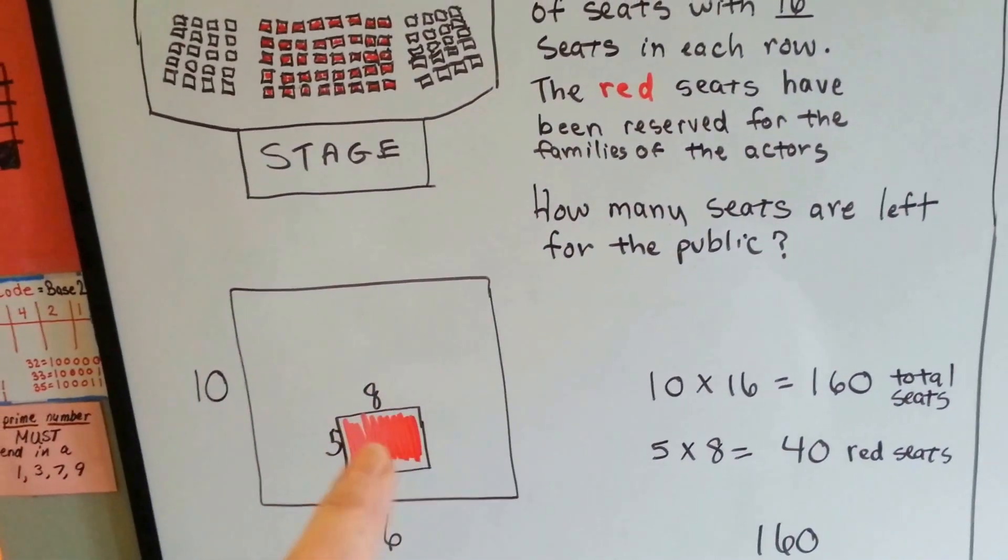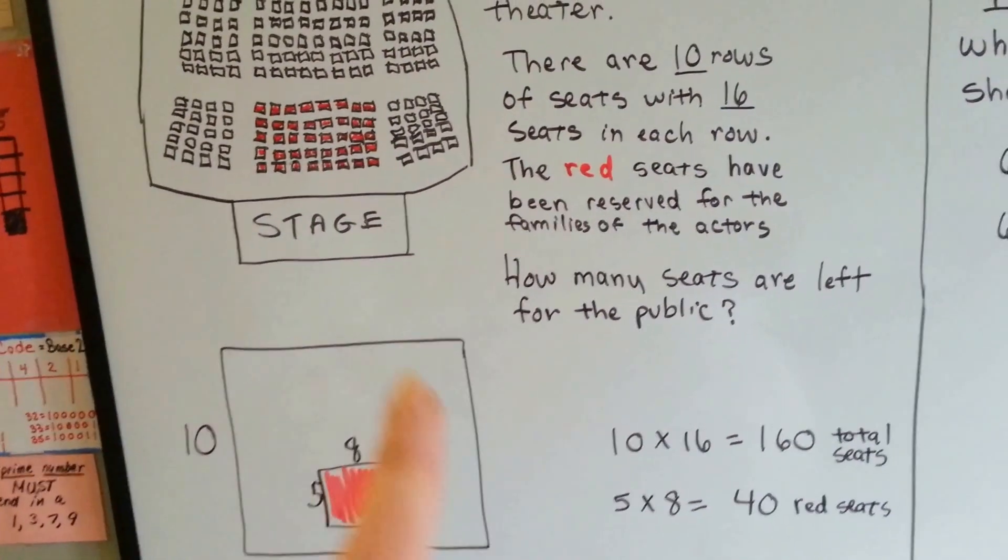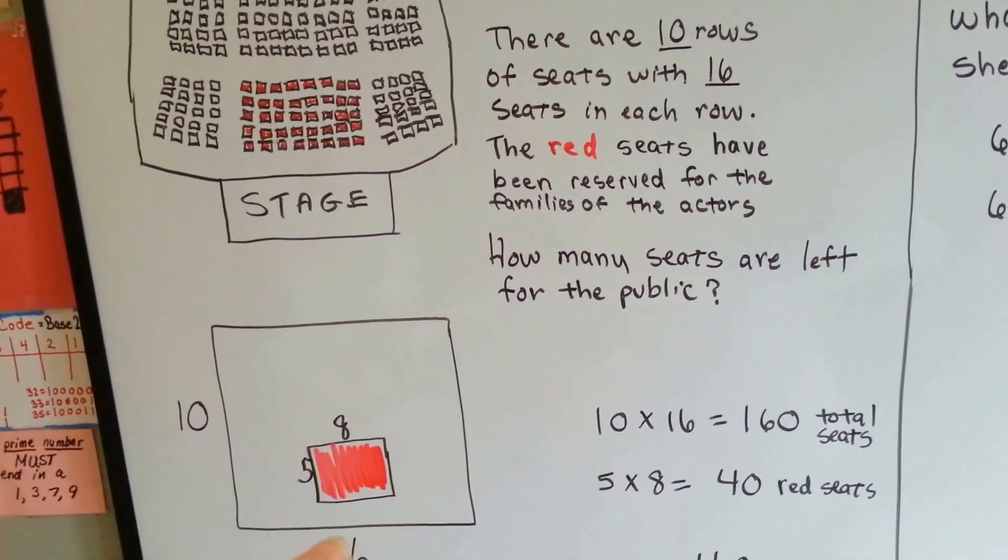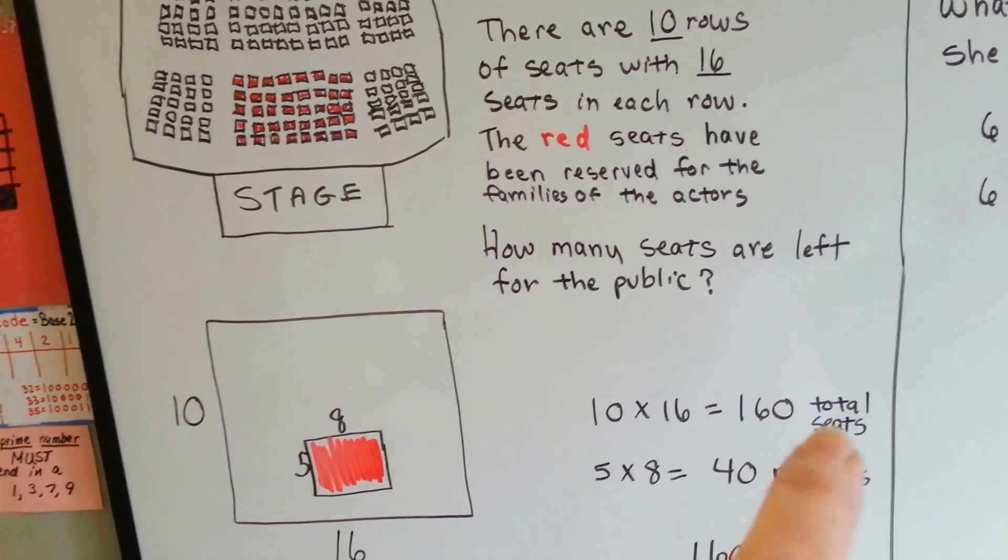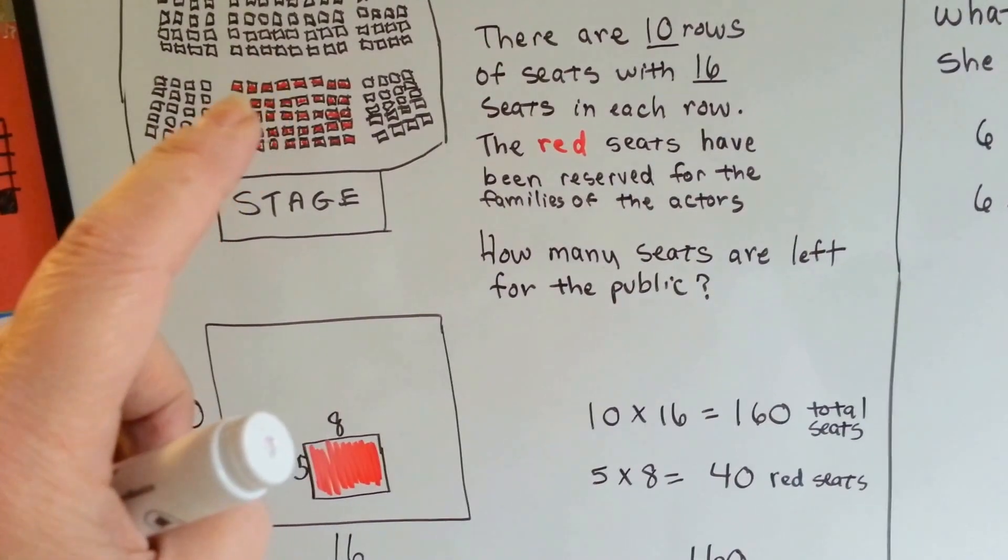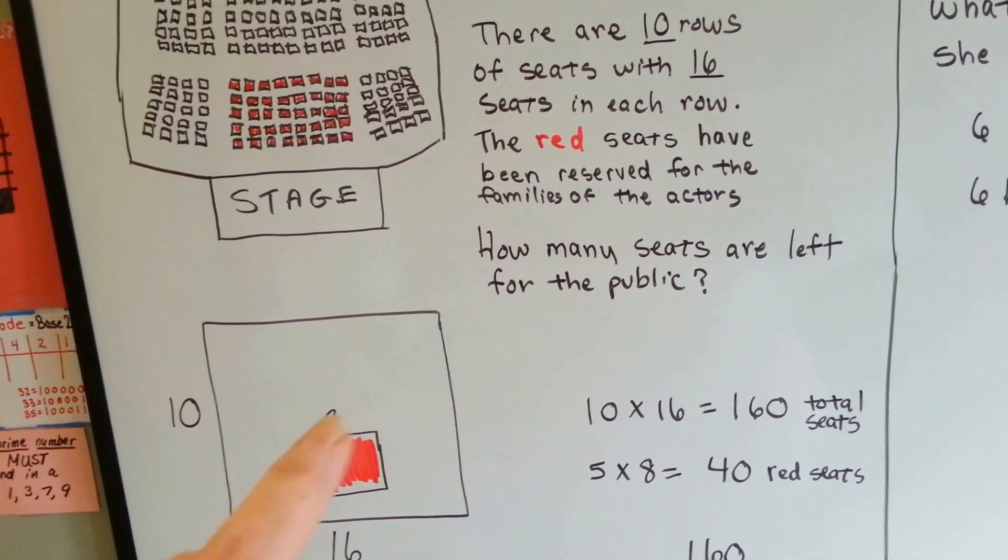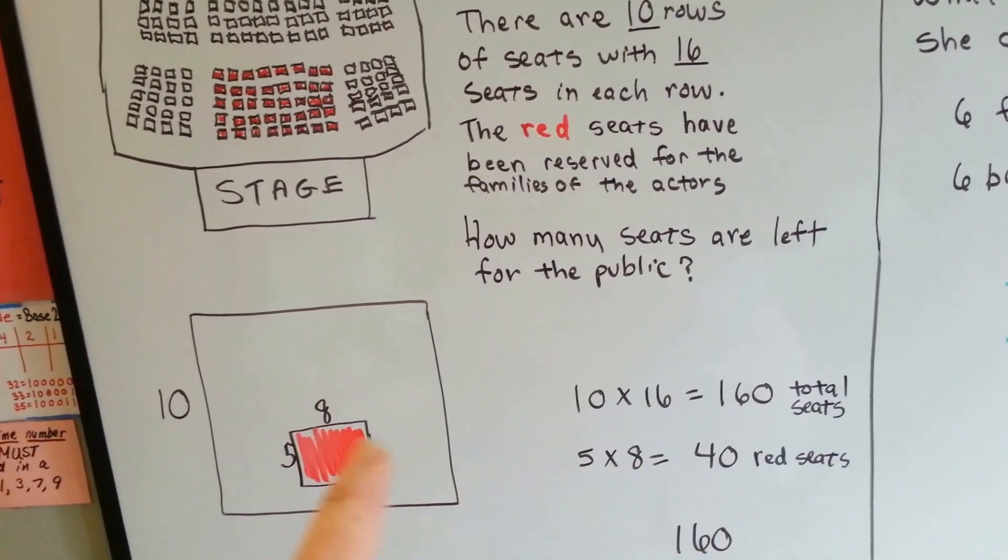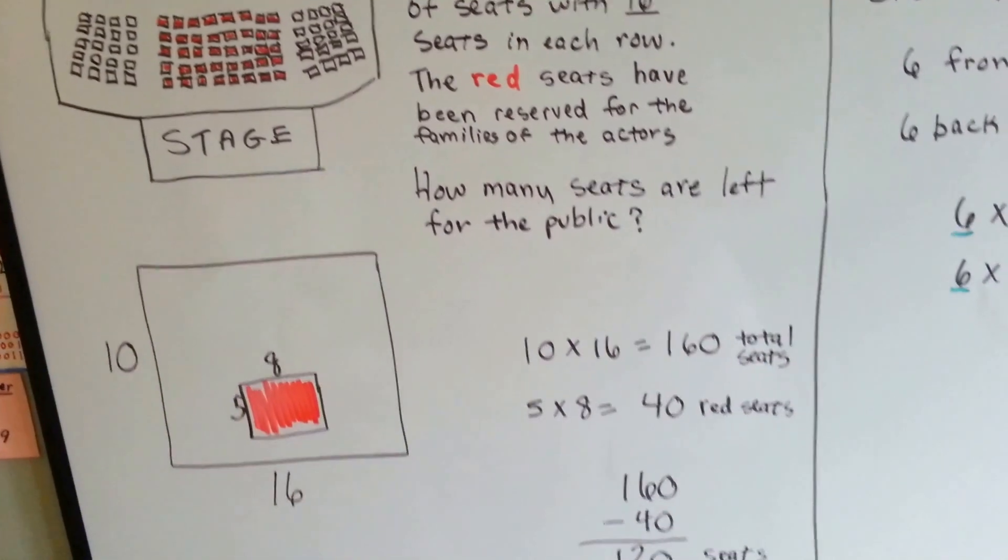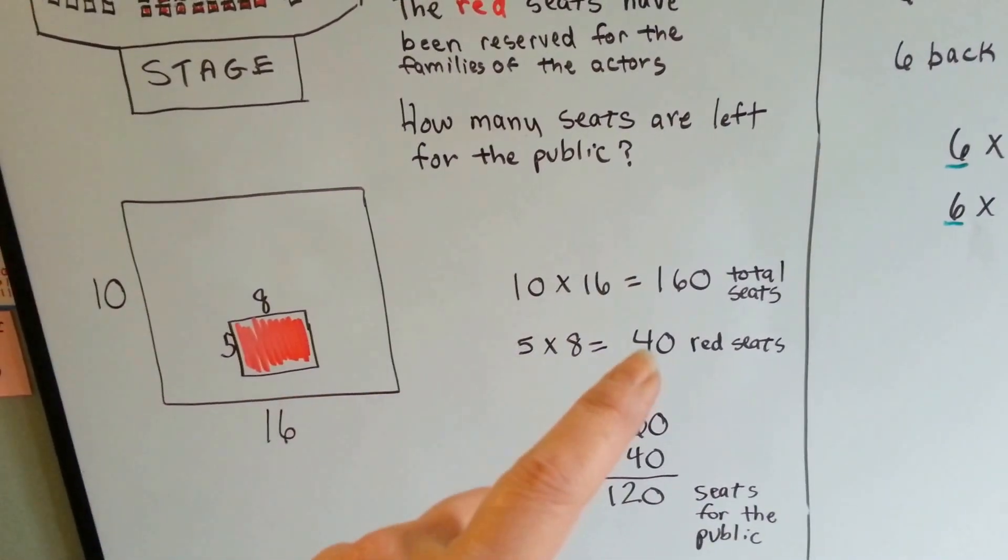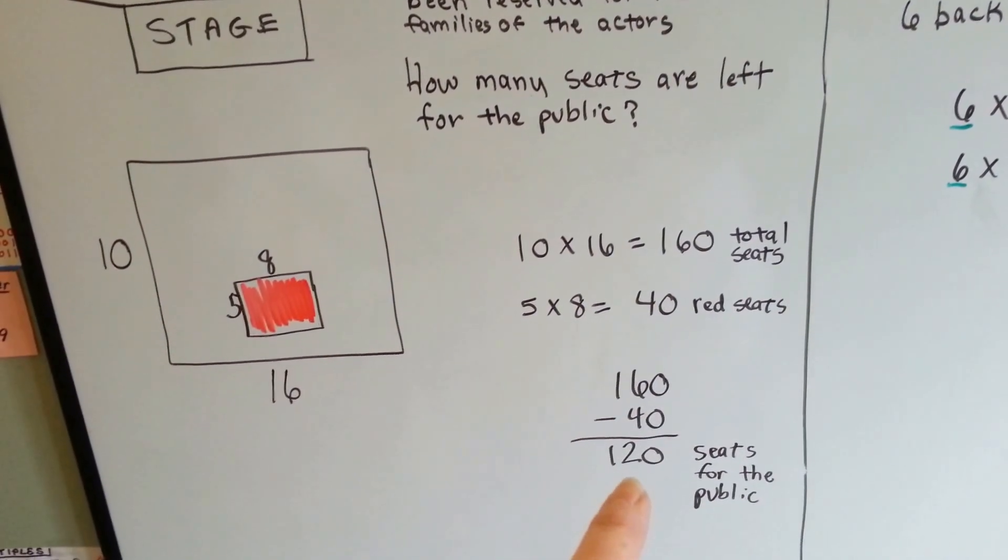So five times eight are red and ten times sixteen are the whole theater. So the first thing we're going to do is the ten times sixteen, which is a hundred and sixty. That's the total seats. Then we're going to take the number of the seats that are reserved for family, the five times eight, which is forty, and we're going to subtract this amount from the big amount. So a hundred and sixty seats minus the forty red seats for the family leaves a hundred and twenty seats for the public.